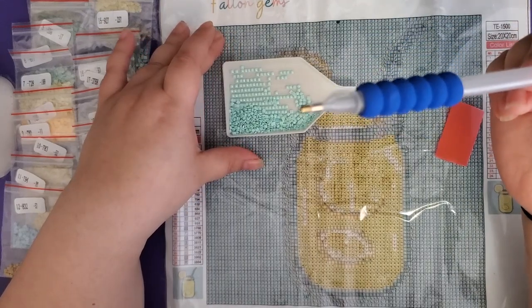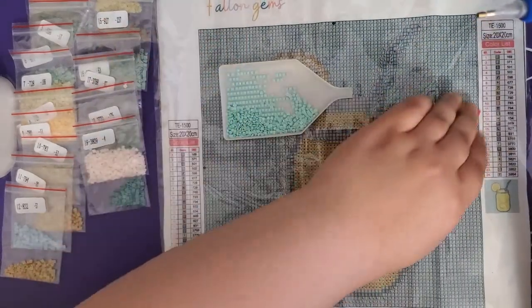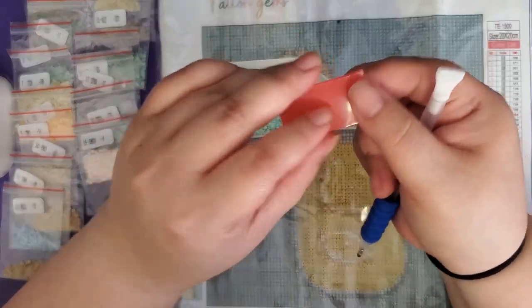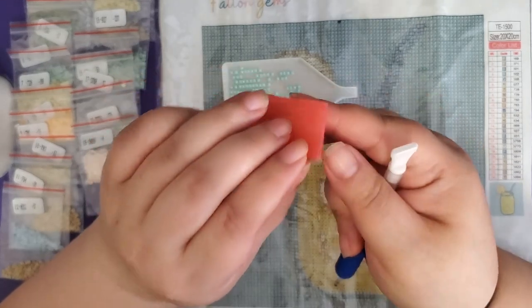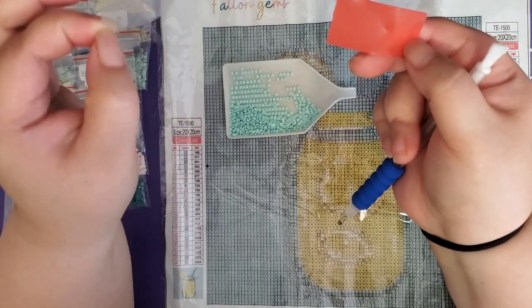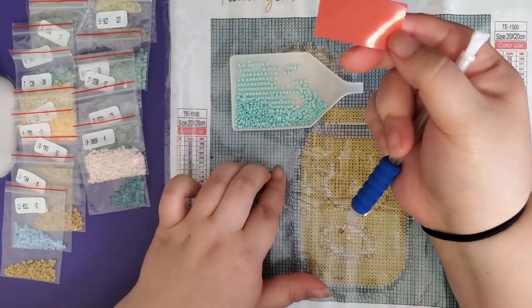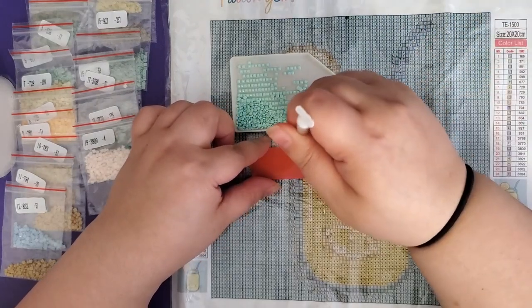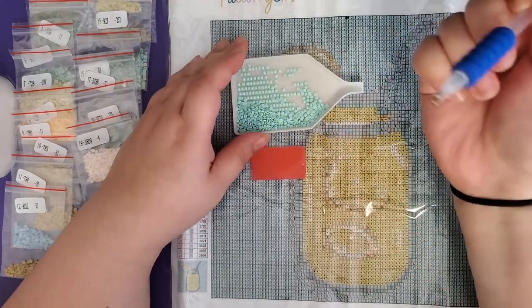Next, we're going to grab our pen and we're going to grab our wax. There is a sheet of plastic on this wax that we need to peel back, otherwise nothing will happen. So we're going to peel that, and we're going to take the pen and dip it into the wax.